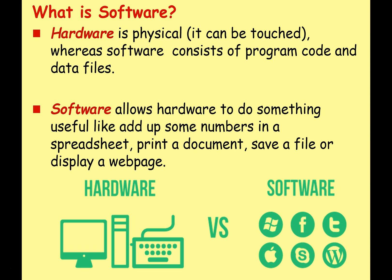So let's remember, hardware is physical — it's tangible, it's what we can touch. Whereas software consists of program codes and data files. So the computer itself, the CPU, the motherboard, the video card — all of that is hardware. The software is the instructions that allow the hardware to do something useful, like add up numbers in a spreadsheet, print a document, or display a web page.